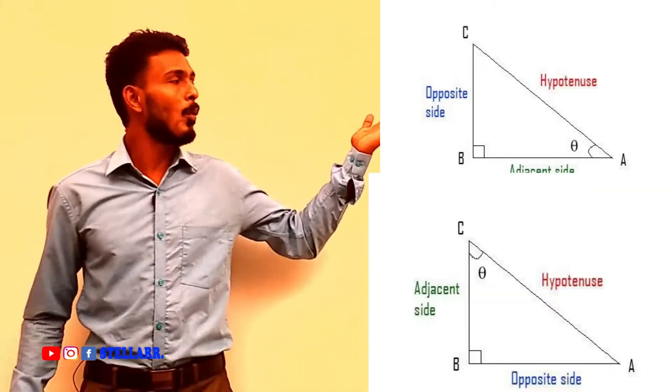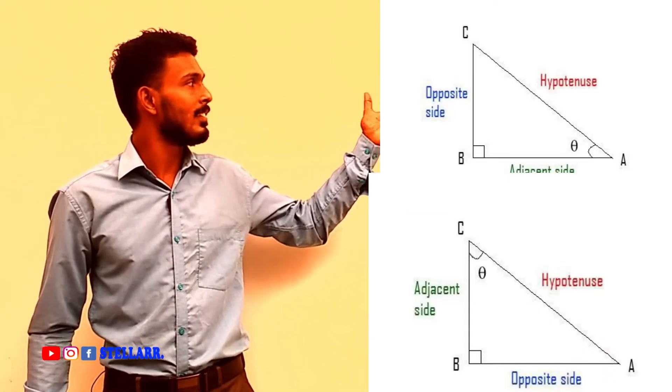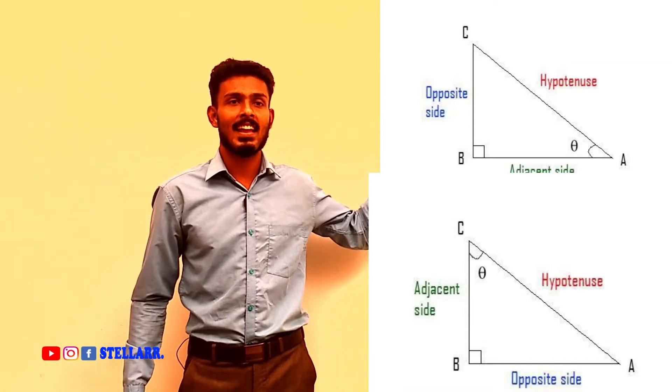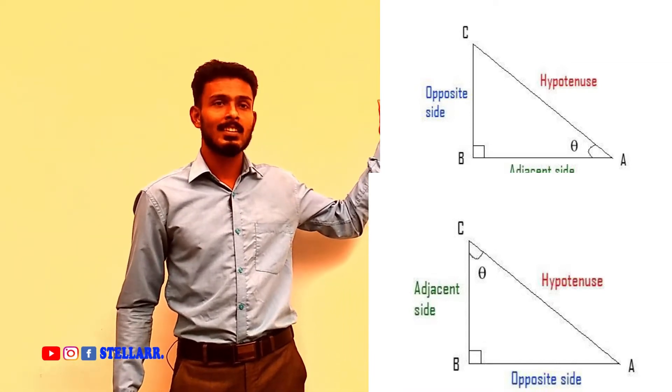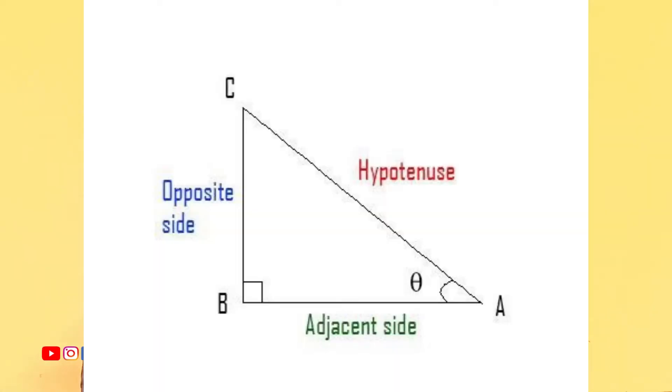Now, consider the right-angled triangle ABC. On the board, we have two triangles, ABC, which are right-angled triangles. In this, the side that is opposite to the right angle is called the hypotenuse. Then, the side that is opposite to the angle theta is called the opposite side. Then, the side which is adjacent or near to the angle theta is called the adjacent side.